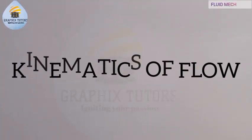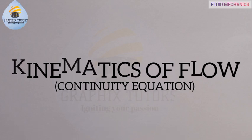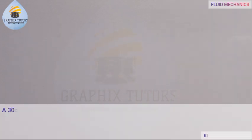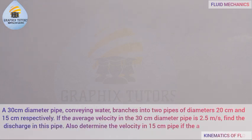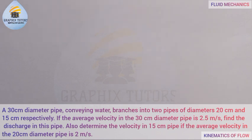Good day everyone, my name is Graphics. In this video I want to solve another problem in fluid mechanics involving dynamics of flow. The question goes like this: a 30-centimeter pipe conveying water branches into two pipes of diameter 20 centimeter and 15 centimeter respectively. The average velocity in the 30-centimeter diameter pipe is 2.5 meters per second.